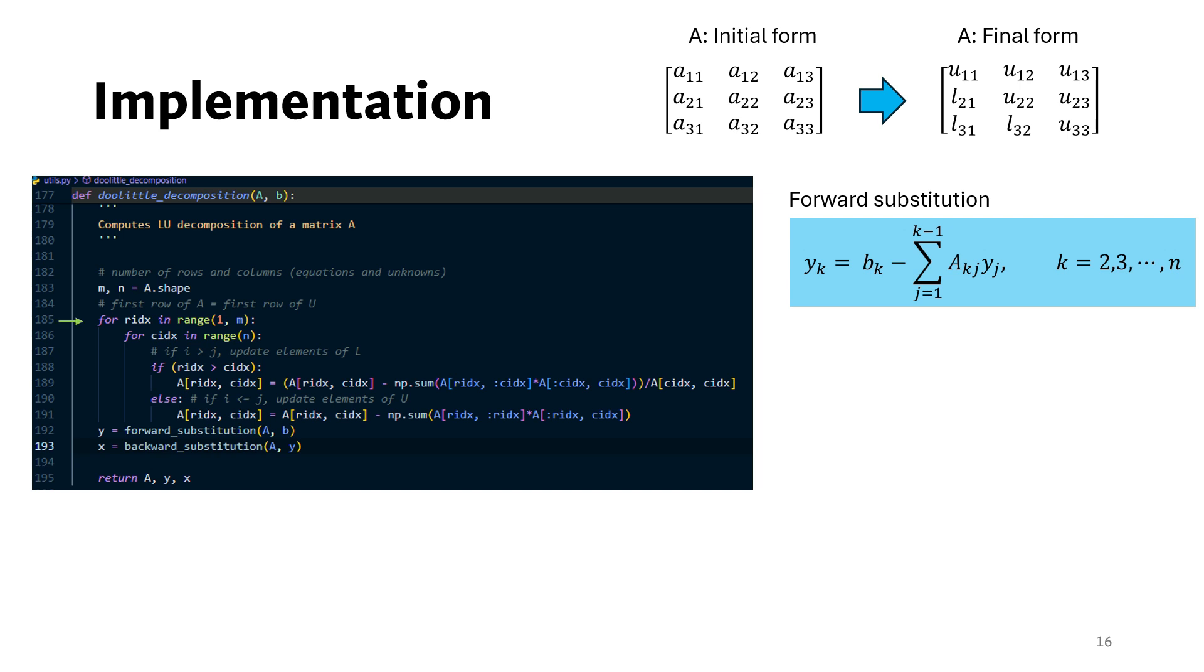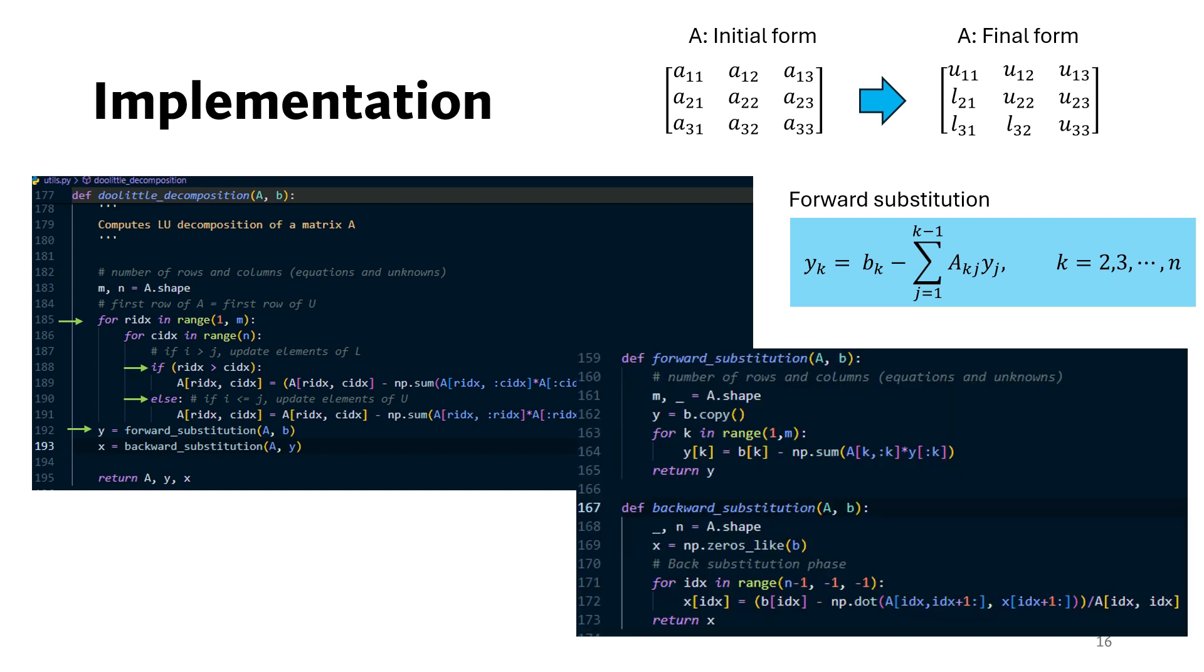Then we loop over the columns and if the row index is greater than the column index, we update the lower triangular element. Otherwise, we update the upper triangular element. After that, we run the forward substitution followed by the backward substitution. This is the code for forward and backward substitutions.